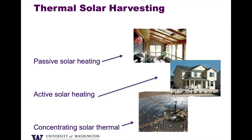At a larger scale, we can also talk about concentrating solar thermal, where instead of concentrating light onto a photovoltaic cell, we're concentrating light onto a heat-absorbing medium that we can then transfer to extract heat somewhere else. Typically, for long-distance communication of that energy, we extract that heat and then turn it into electricity with basic mechanical means — turbines and steam-driven systems.